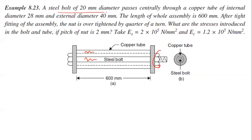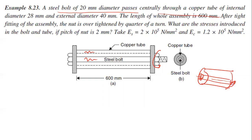A steel bolt of 20 mm diameter passes centrally through a copper tube. The copper tube has an internal diameter of 28 mm and an outer diameter of 40 mm. The length of the whole assembly is 600 mm.